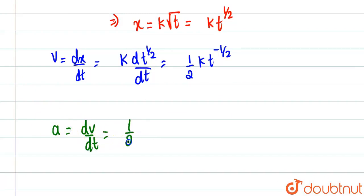So if we differentiate velocity, what we will get - since half into k is a constant, so we will bring it out of the differentiation and we'll put t to the power minus 1 by 2 divided by dt.